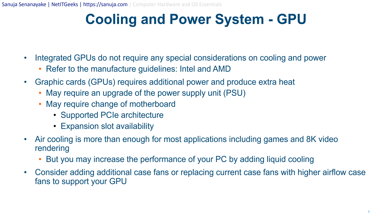Expansion slot availability may also require a motherboard replacement — you may not have enough PCIe slots or available slots for a PCIe 4.0 graphic card. Air cooling is more than enough for most applications including gaming and 4K rendering. With good air circulation you can run 8K video rendering and high-end gaming without liquid cooling. However, you may hit thermal throttling during 4K rendering, so liquid cooling can help avoid that. I recommend liquid cooling for the CPU rather than the GPU in 4K rendering scenarios.